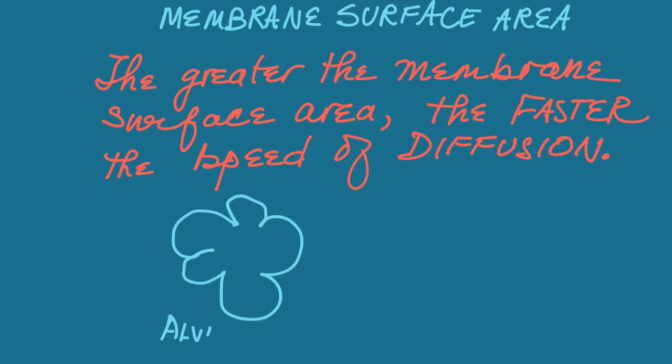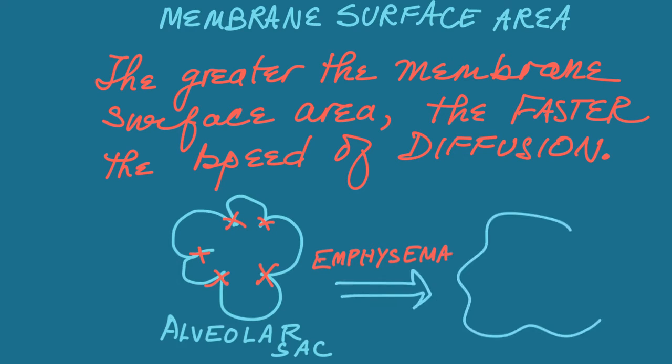So let's take a look at the alveolus that's normal. And this is the alveolar sac being damaged. The walls are damaged. In emphysema, there are no walls in between. And this greatly reduces the speed of diffusion.